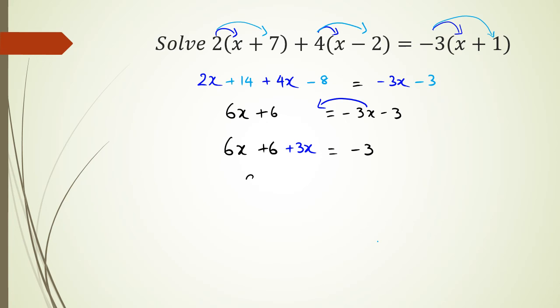Now combining my like terms on the left hand side I have 9x + 6 = -3 minus 6, so 9x = -9. Therefore x is equal to negative 9 divided by 9 which means x = -1 and that's my final answer for this question.